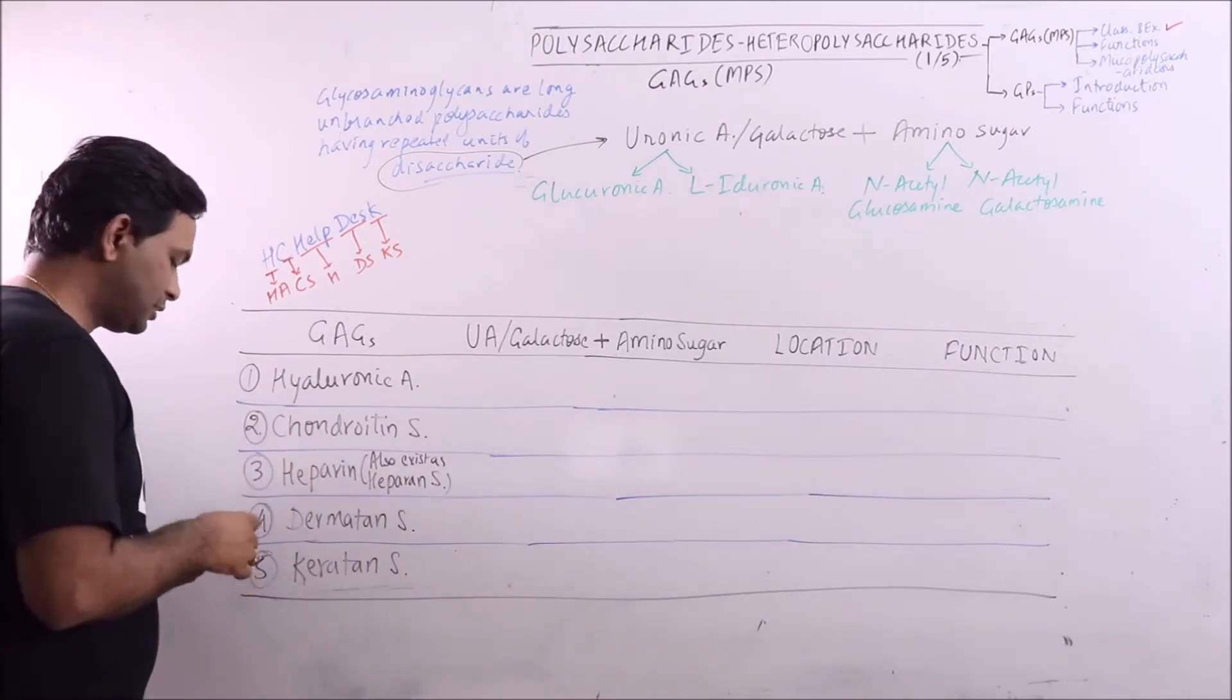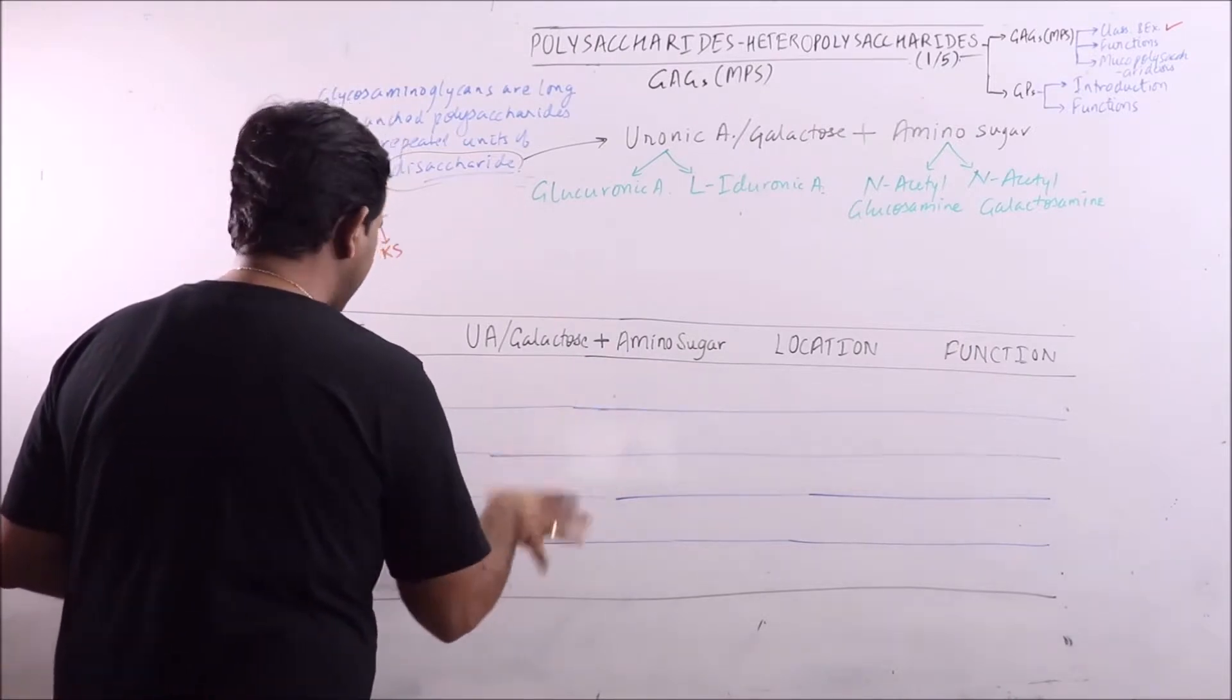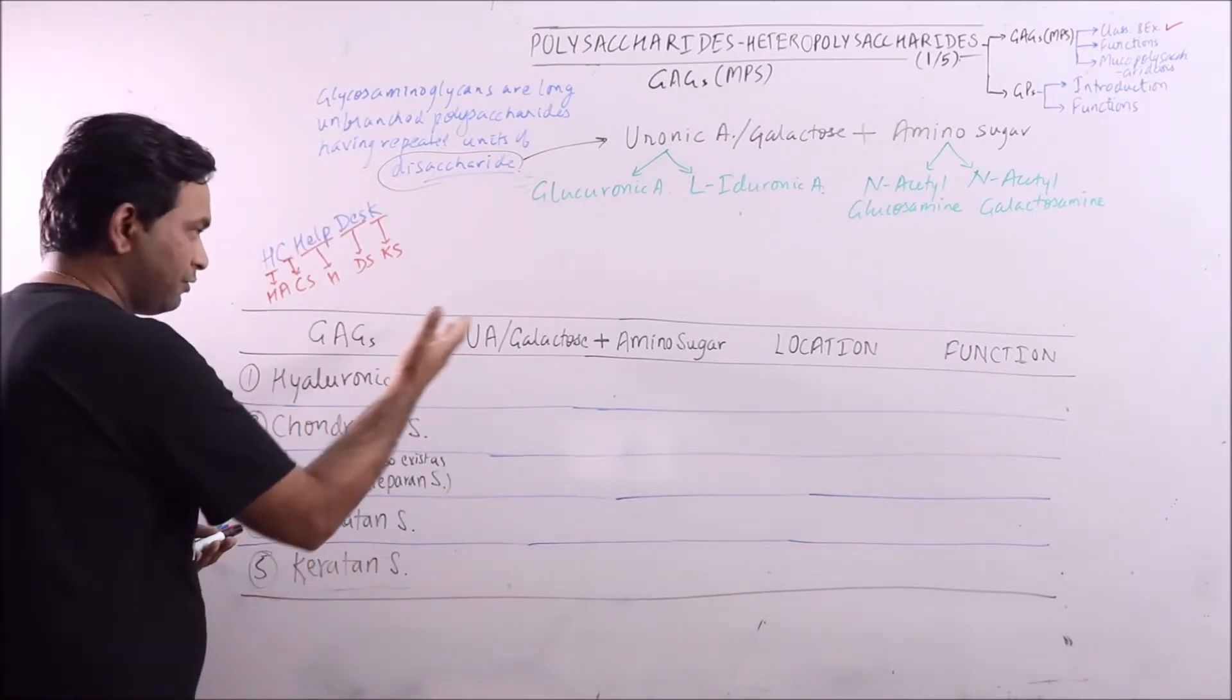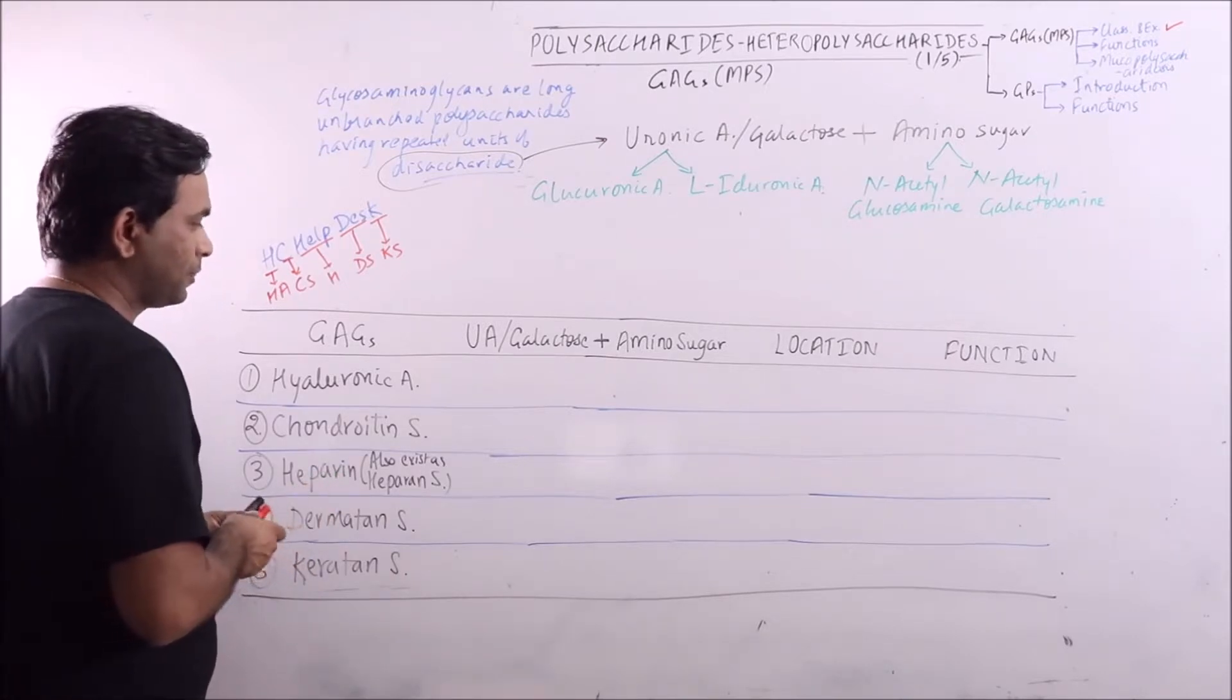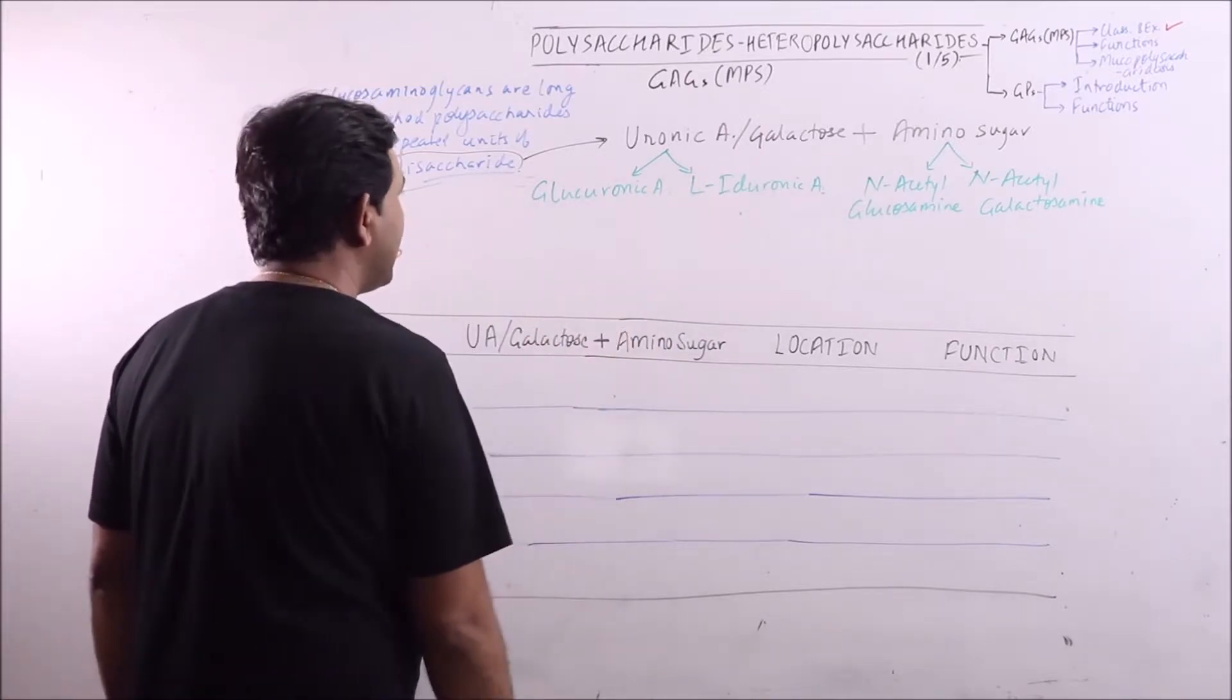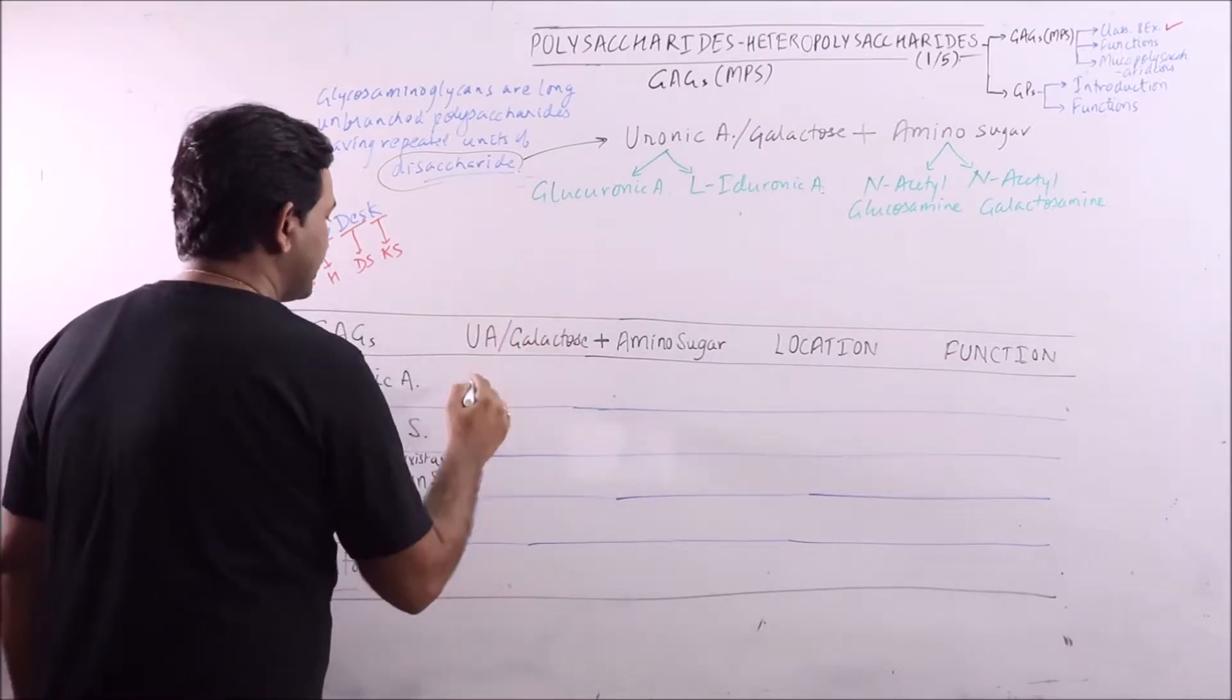This sequence will allow us to remember these constituents in a very easy way. For example, if I am taking the uronic acid or galactose, we know that if uronic acid is there it will be either glucoronic acid or L-iduronic acid. So in first three there is glucoronic acid.